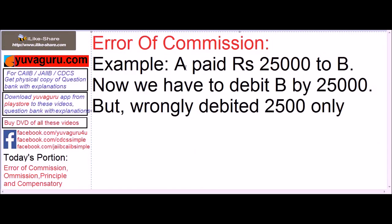Suppose A paid 25,000 to B, but while recording in the books, he has to debit the account of B. He has to debit B by 25,000 — credit the giver, debit the receiver. But wrongly, he debited by 25,000 only in the wrong account. That would be an Error of Commission.